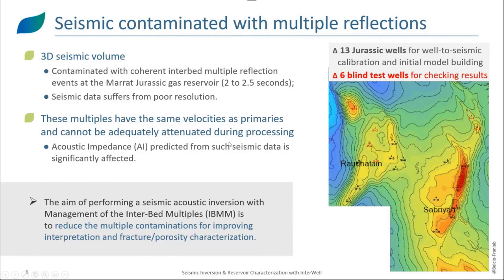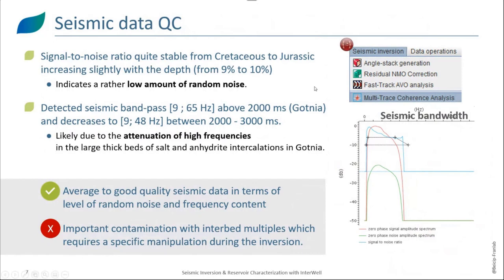Let's start with the first step, which is seismic data QC. There is a dedicated tool for seismic data QC in Interval called multitrace coherence analysis. We have extracted a signal-to-noise ratio in our seismic volume. We have seen that this ratio is quite stable from the Cretaceous to the Jurassic, and is slightly increasing with depth from 9 to 10 percent. These results indicate that we have a low amount of random noise.